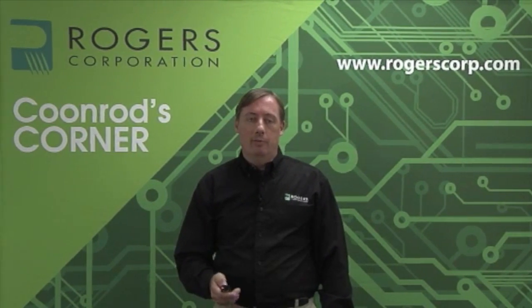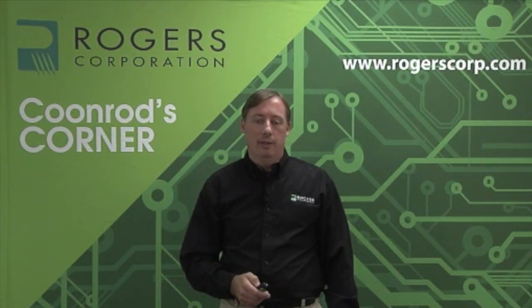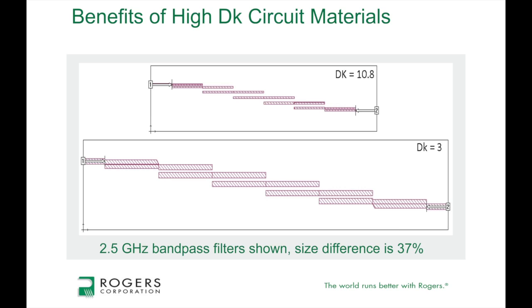I've built several circuits like this to prove out the concept. What I've shown here are two models of the same filter. Both will give the same bandpass filter response at 2.5 gigahertz, but they are very different in size. The lower dielectric constant material is about 37 percent bigger than the higher dielectric constant material at about 10.8 — a typical size reduction you can see with this difference in dielectric constant.